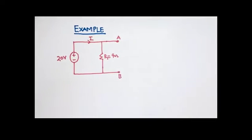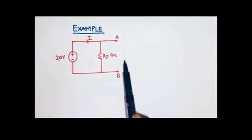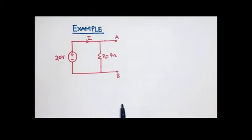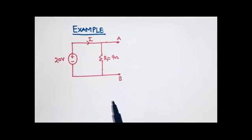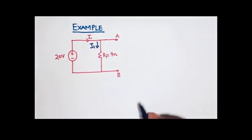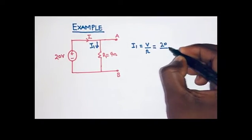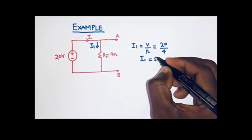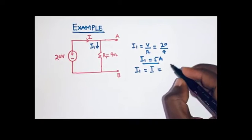Now, let's try to consider this example. In this example, we have a 20-volt voltage source connected across R1, that is 4 ohms. We also have a current that is flowing through the entire circuit, and we notice that we have an open circuit between node A and node B. This means that we have a very high electrical resistance between the two nodes, so very little amount of current would like to flow through this direction, with almost all the current flowing through R1, that is the 4-ohm resistor. Using Ohm's law, I1 is equal to V divided by R, which is equal to 20 divided by 4 ohms, giving us I1 equal to 5 amperes. Because the value of I1 is equal to I, then I is also equal to 5 amperes.